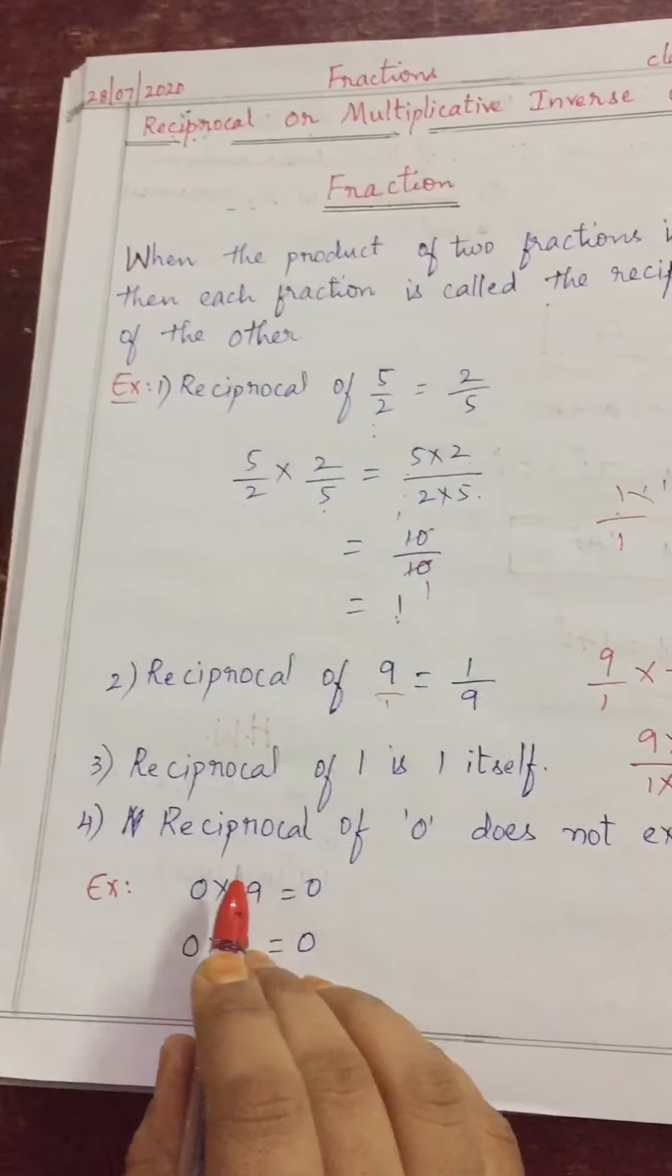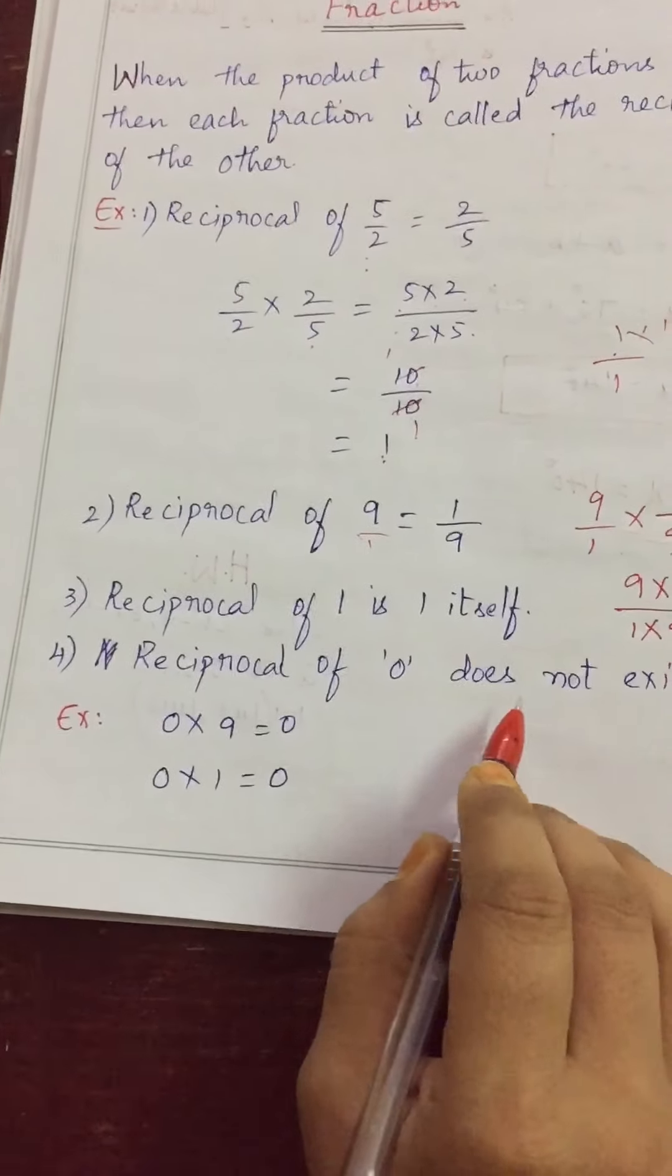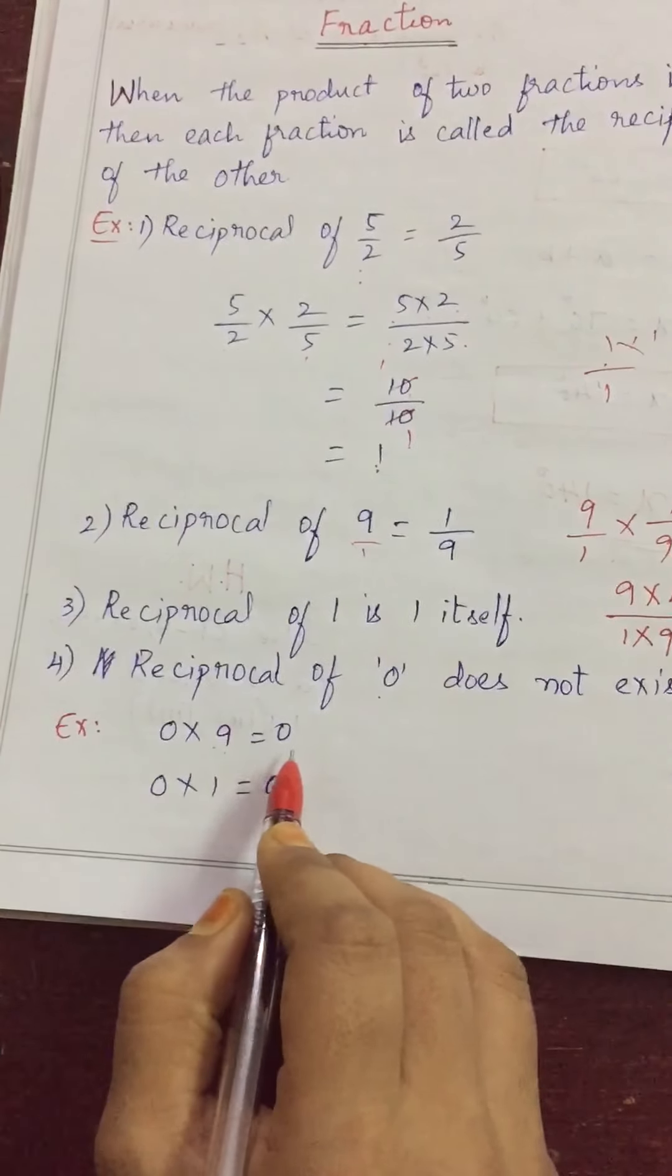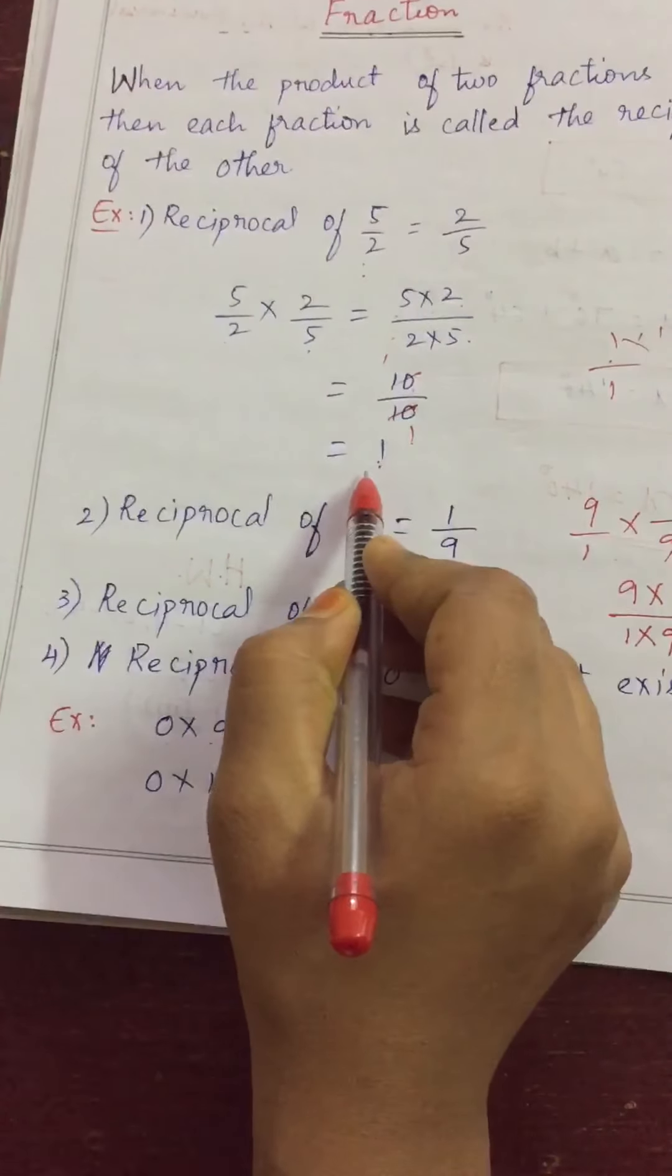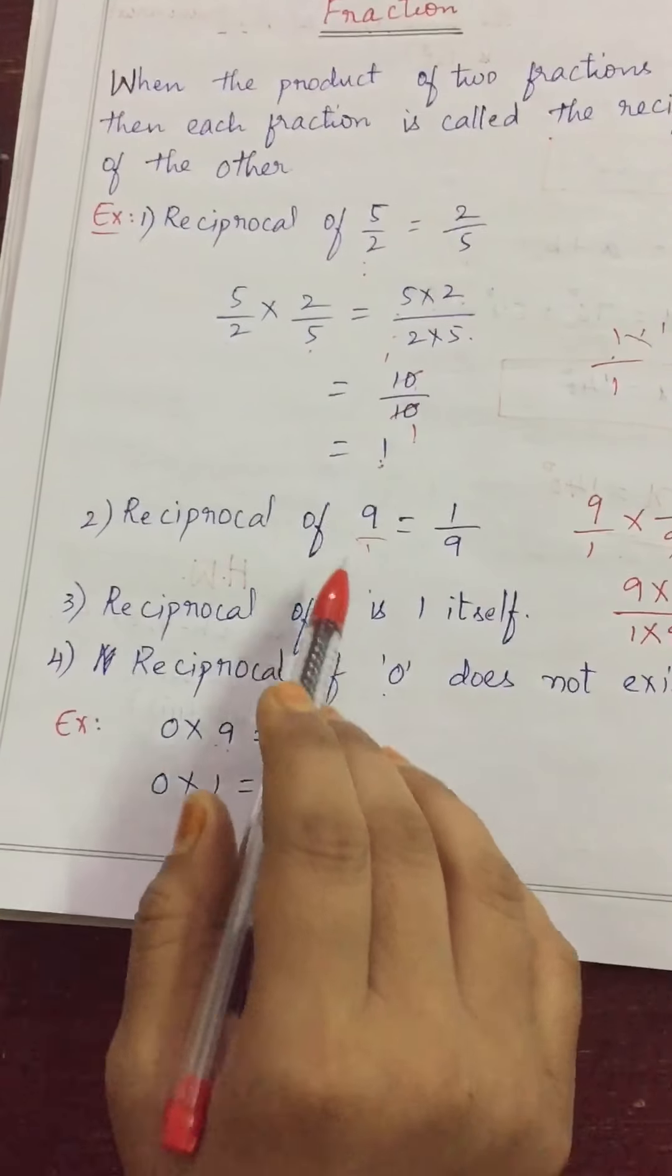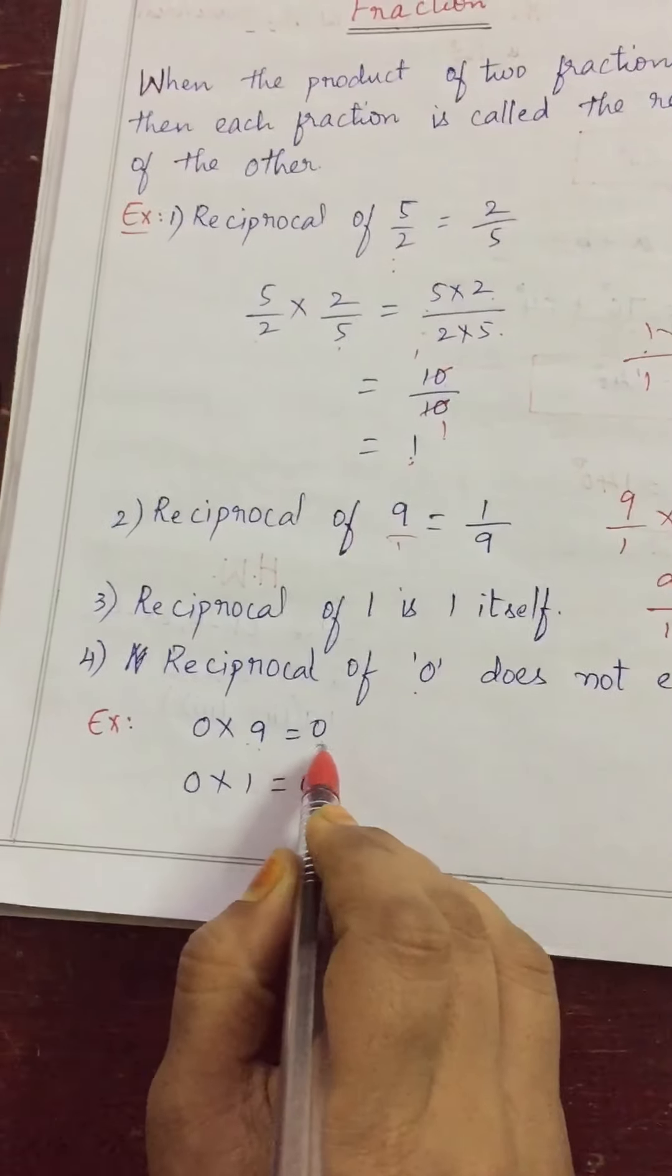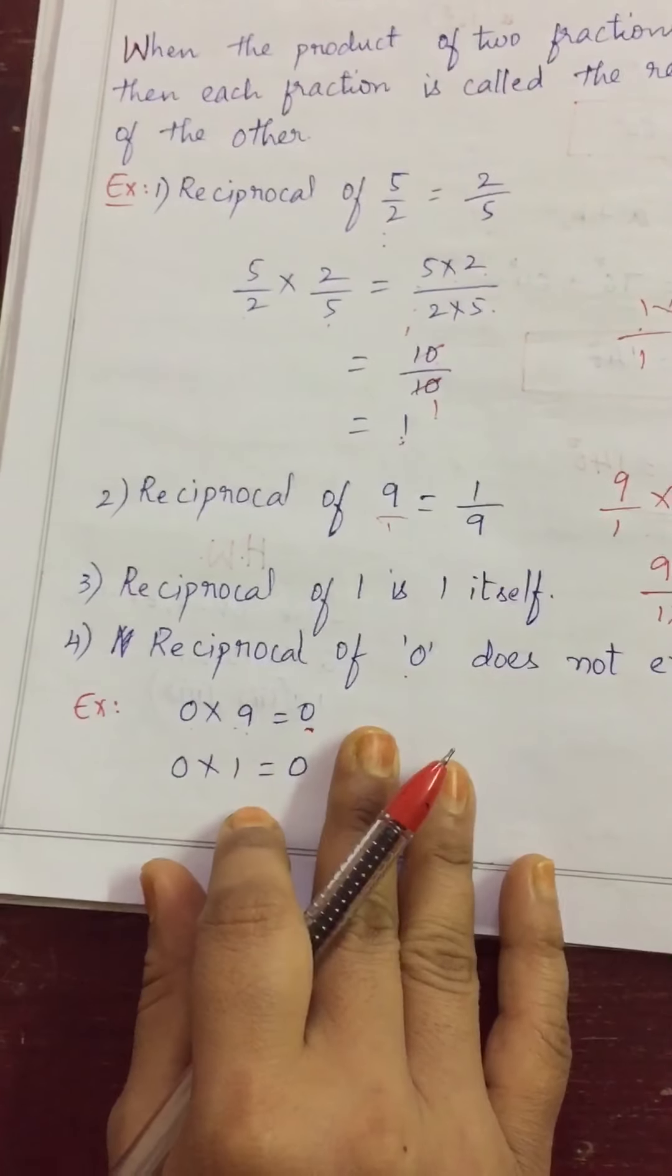And the second fact is reciprocal of 0 does not exist. Means there is no reciprocal of 0. See, example 0 you multiply with any number you will get 0 only not 1. But for reciprocal we should get answer as 1. You multiply any two numbers if answer is 1 that is called reciprocal to each other. But here we are getting 0. That is why 0 does not have any reciprocal.